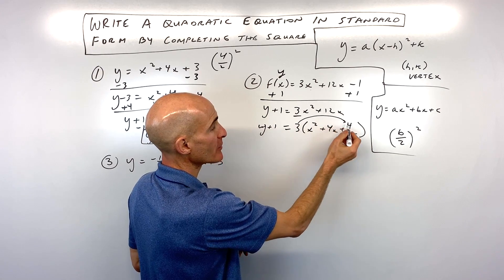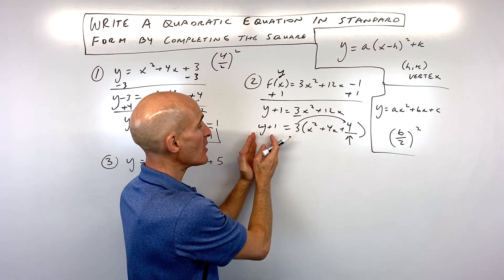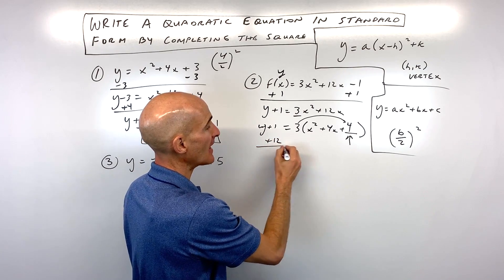So actually out of thin air, we're adding 3 times 4, which is 12, to the right side of the equation. To keep it balanced, we have to add 12 to the left side. Okay, so are you with me so far? So now what we have is y plus 13 equals 3.